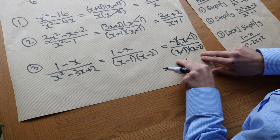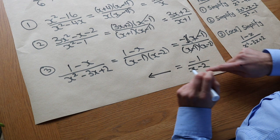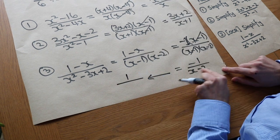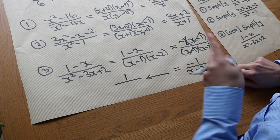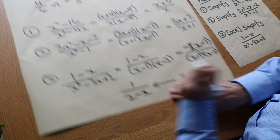Now if you wanted to write this more cleanly and have a positive number in the numerator, we could times top and bottom by minus 1, and that gives you 1 over, and if you times that by minus 1, it just swaps the order so you get 2 minus x, and that's a slightly cleaner solution.